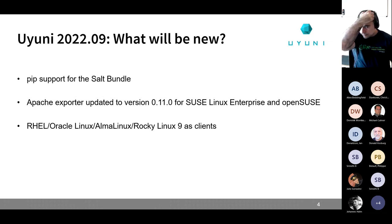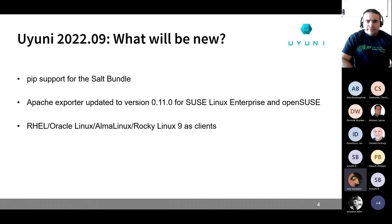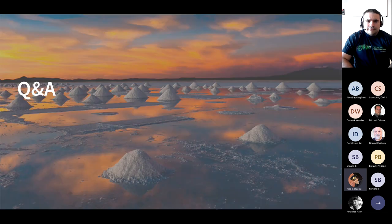We expect to have this ready for Uyuni 2022-09. If you want to help, we would very much appreciate help with the documentation. You can use the documentation we already have for Red Hat, Oracle Linux, and Alma Linux 8 as a base, because for version 9 it's going to be basically the same — there are some changes to channel names but pretty much everything else should be similar. The most likely release date is during the last week of September, between September 26th and September 30th.